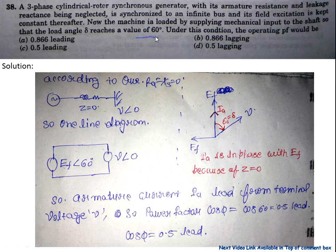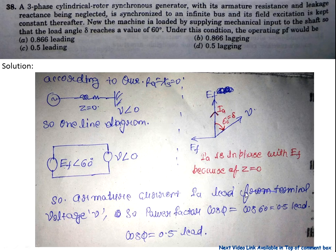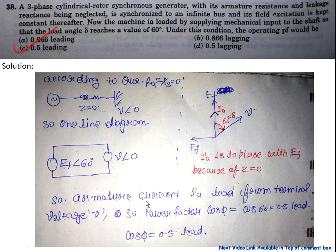Since δ reaches 60 degrees, V is lagged by 60 degrees. From the phasor diagram, the armature current IA leads the terminal voltage V, so the power factor cos φ equals cos 60 degrees, which is 0.5 leading. So answer C is correct.